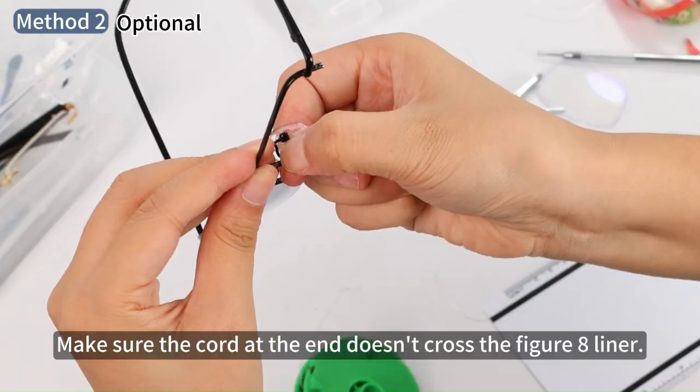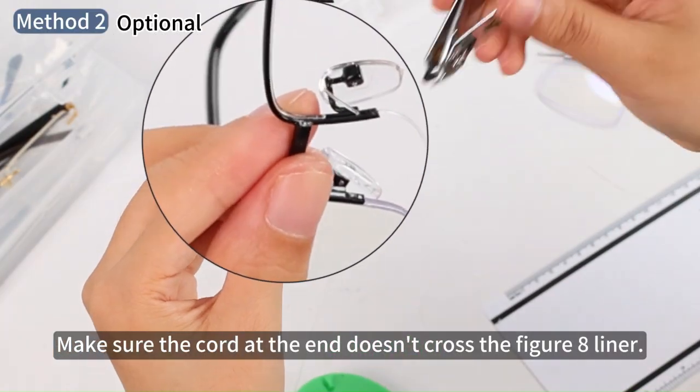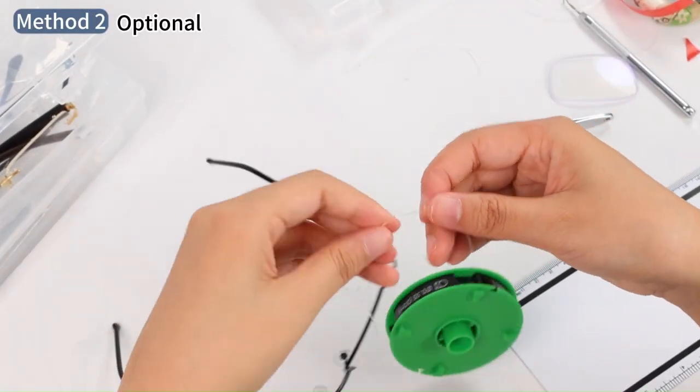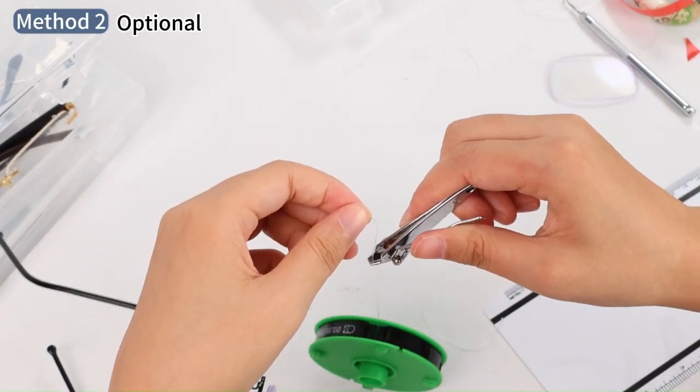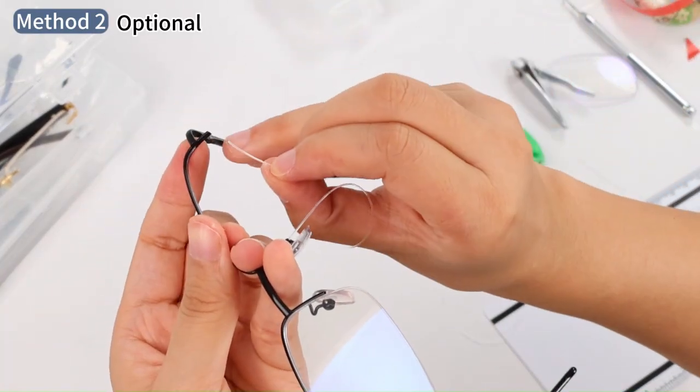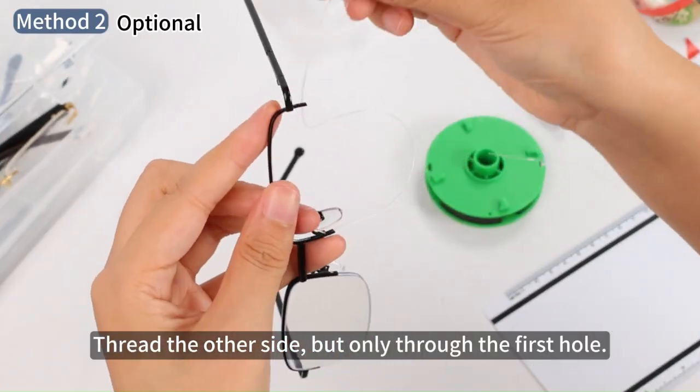Make sure the cord at the end doesn't cross the figure 8 liner. Take note of its length. Thread the other side, but only through the first hole.